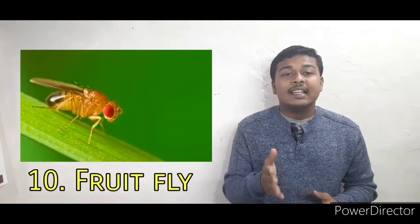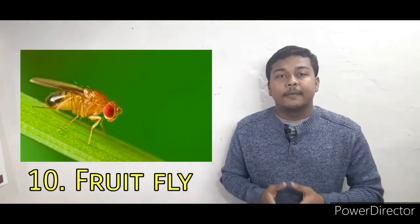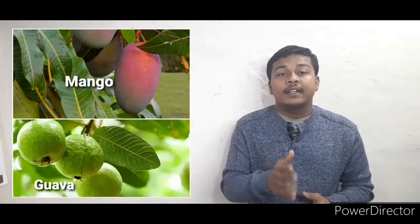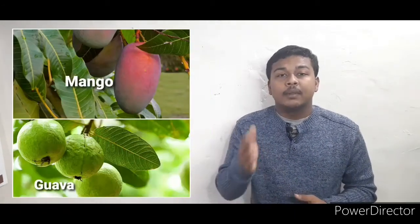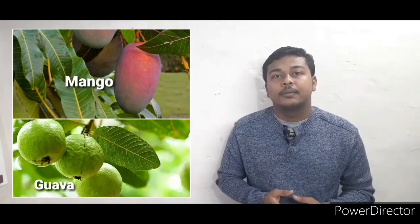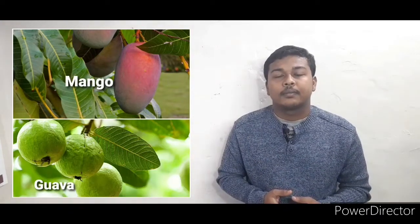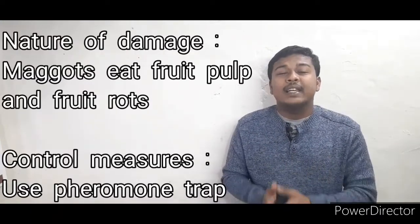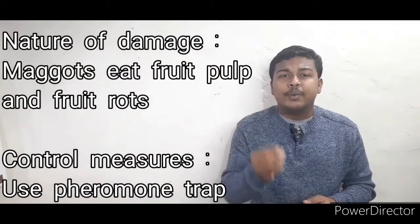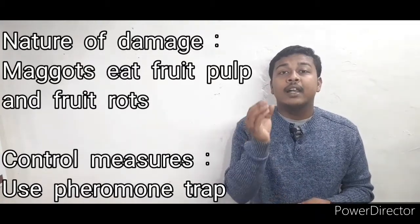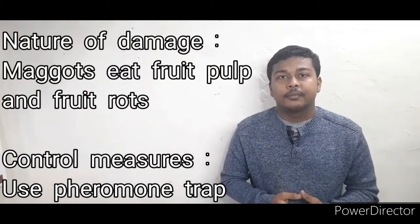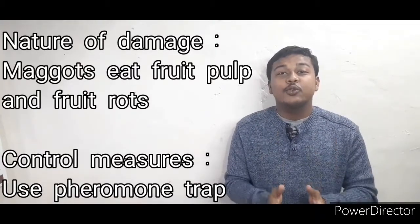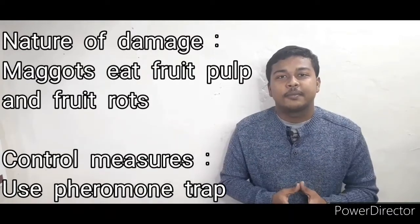The next pest is the fruit fly. The affected crops are mango and guava. The maggots eat the fruit pulp, causing the fruit to rot. To control this, use pheromone traps.